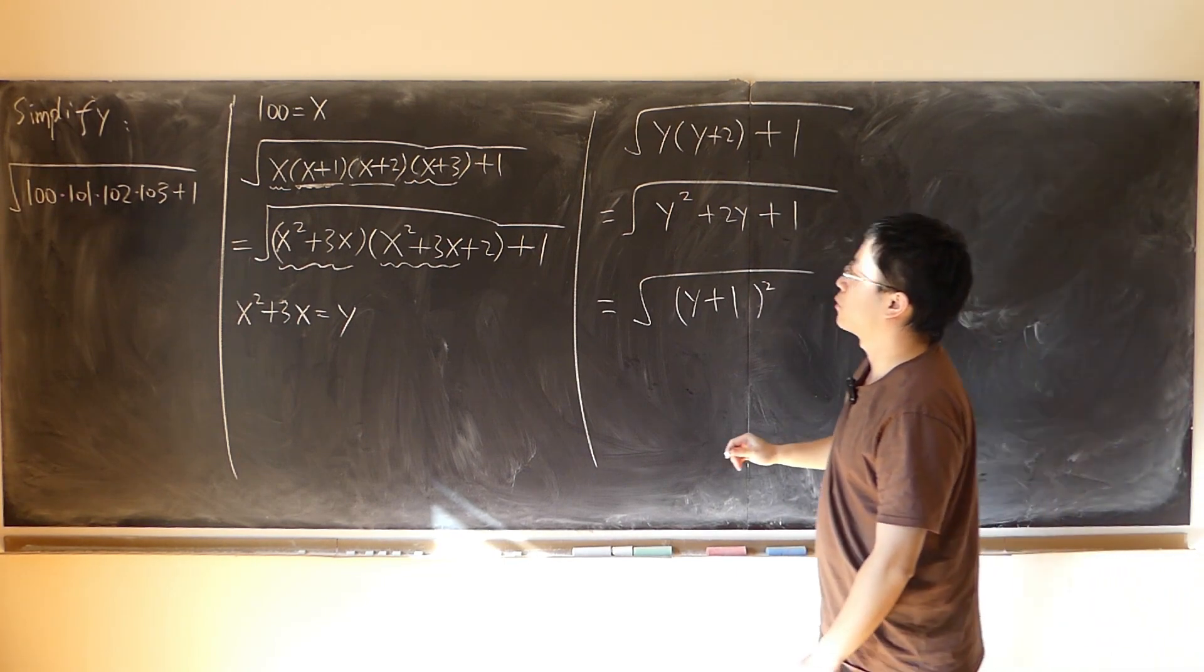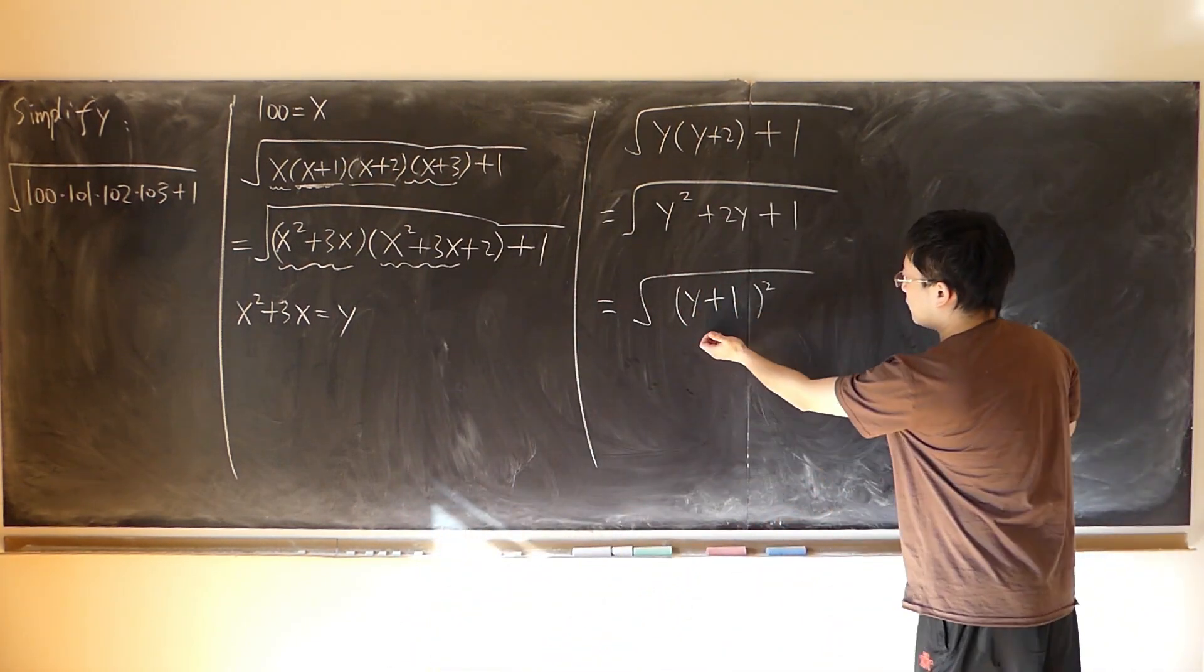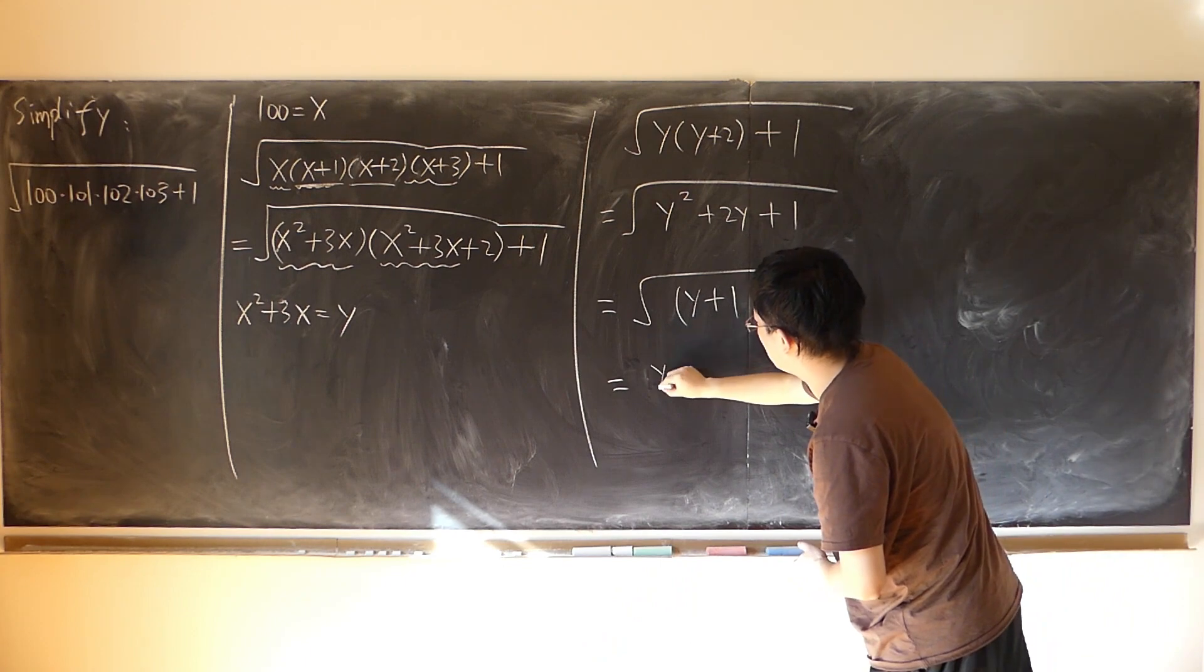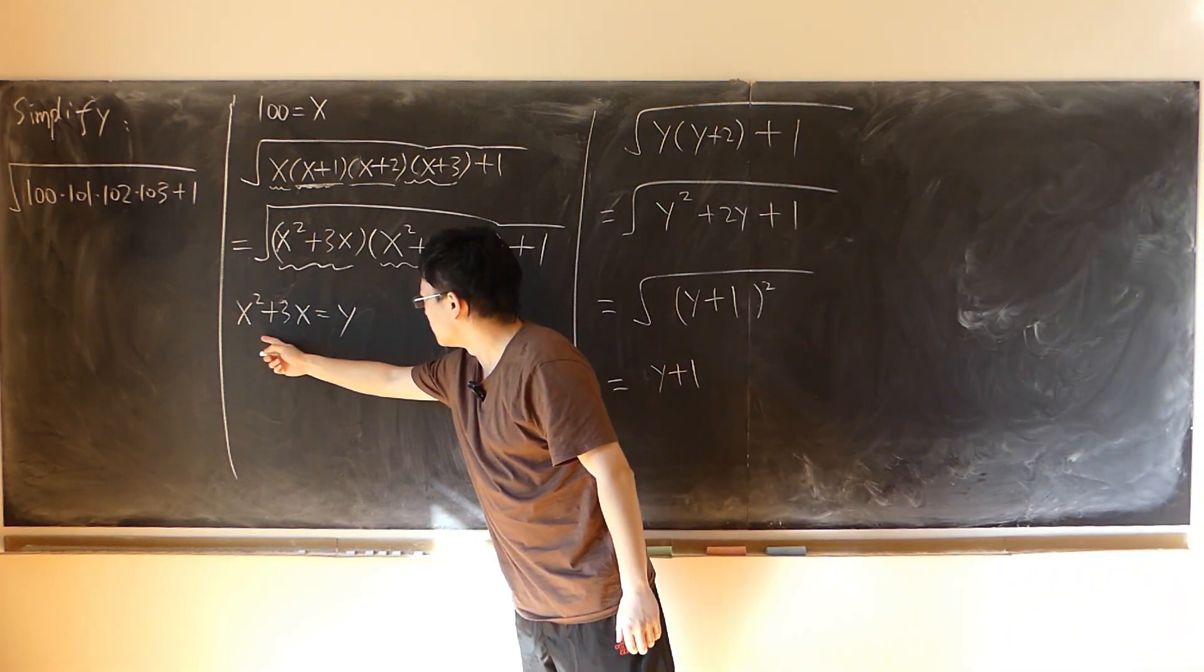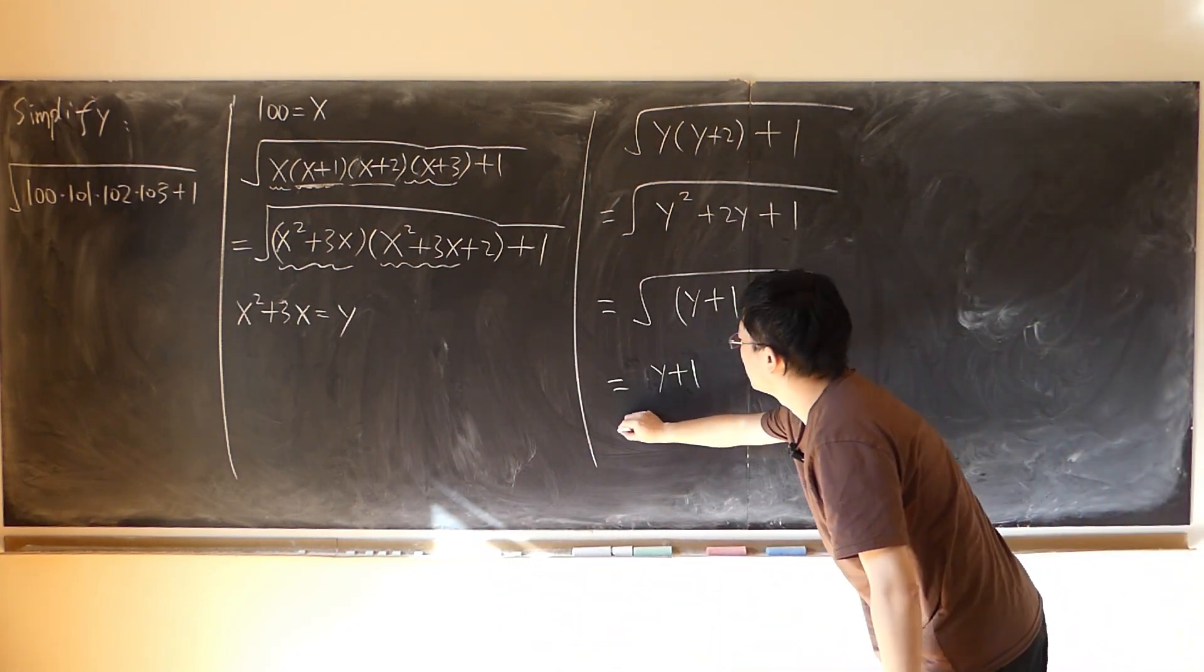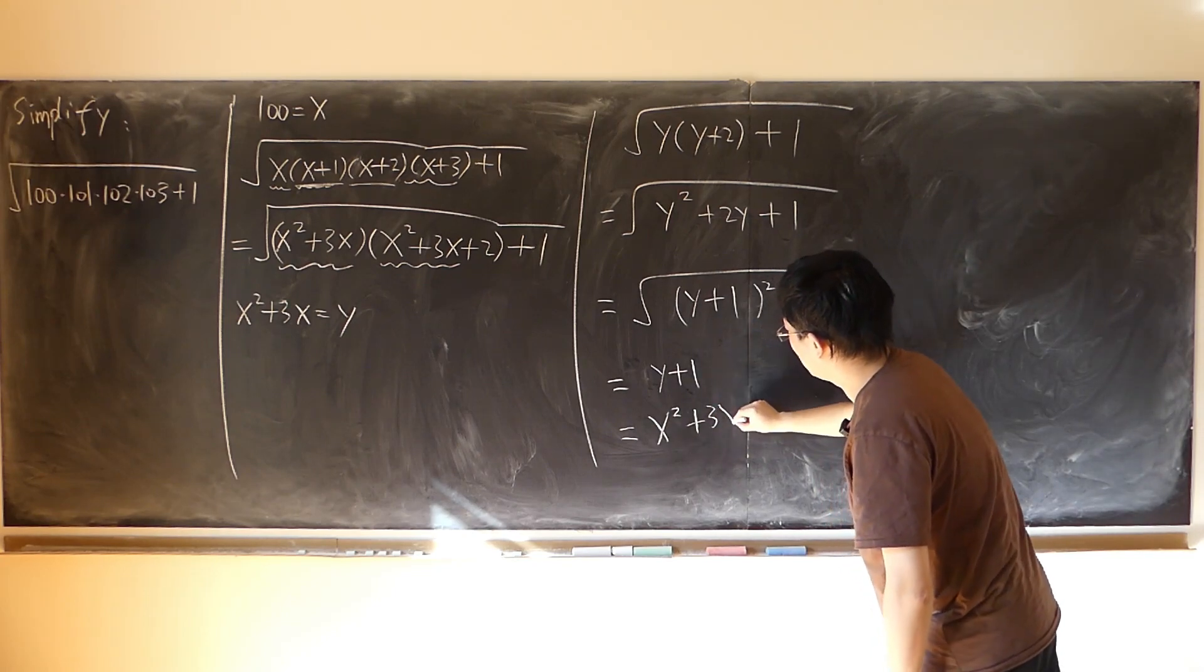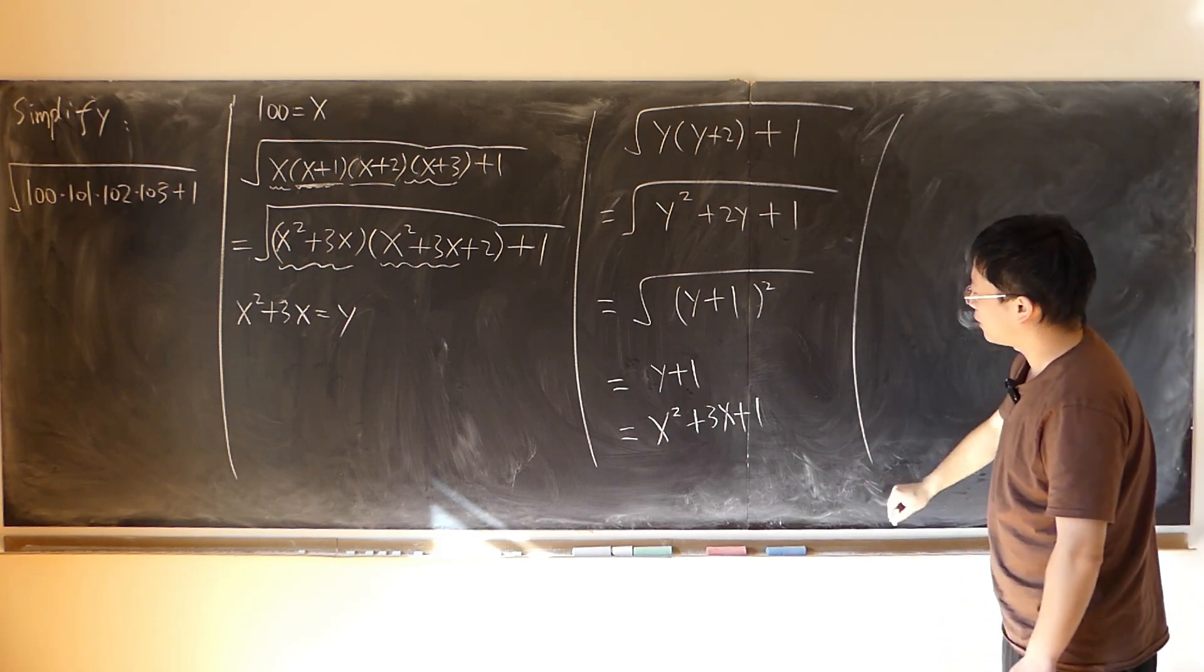Here, x is equal to 100, so I don't need absolute value. It's already positive. Finally, y plus 1, that's x squared plus 3x plus 1. Substitute x equal 100 back.